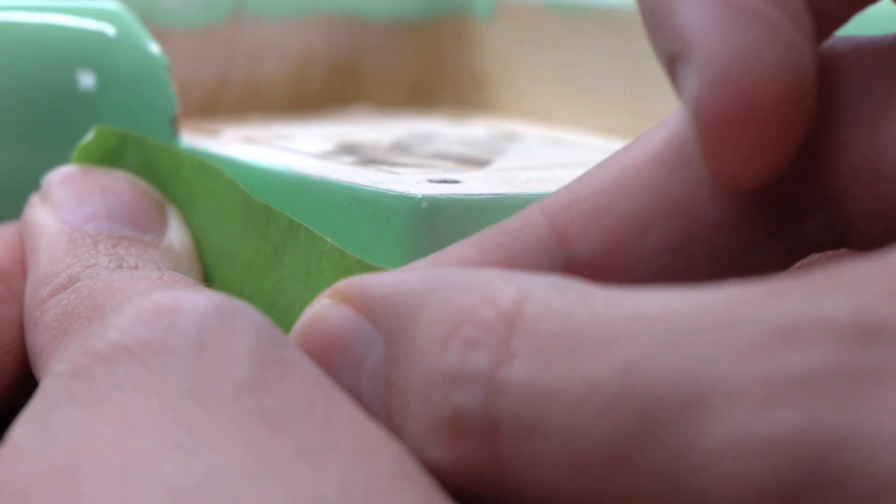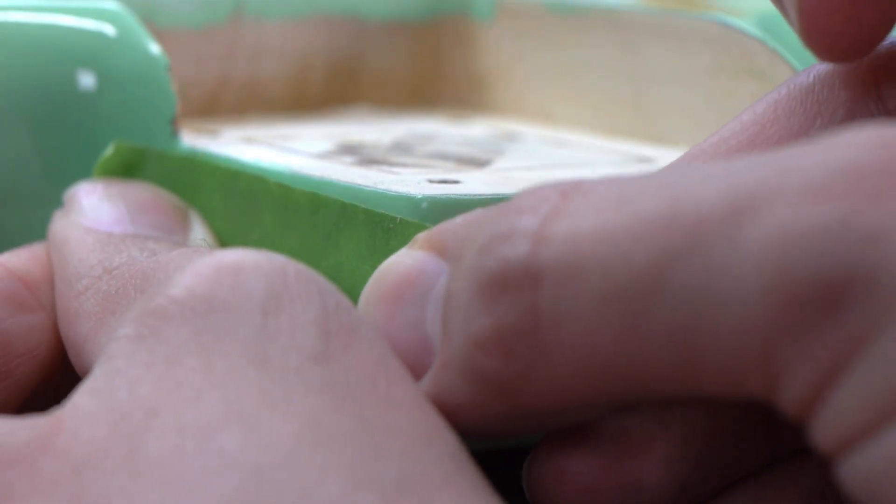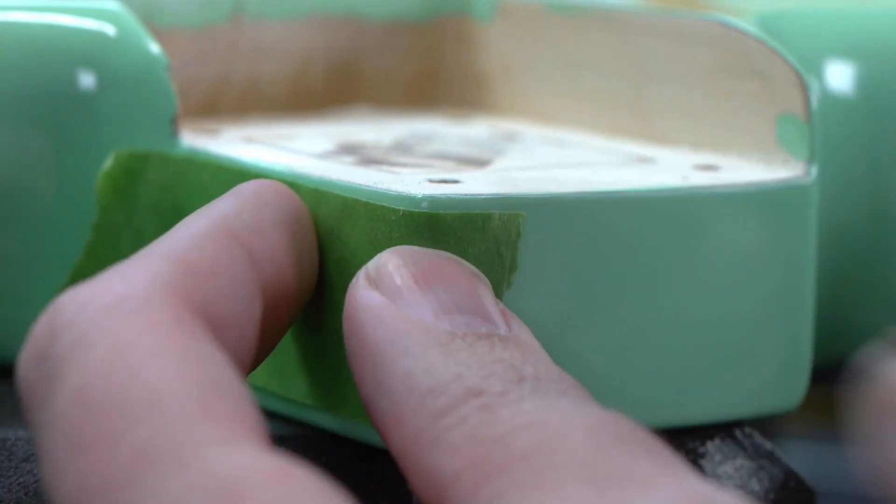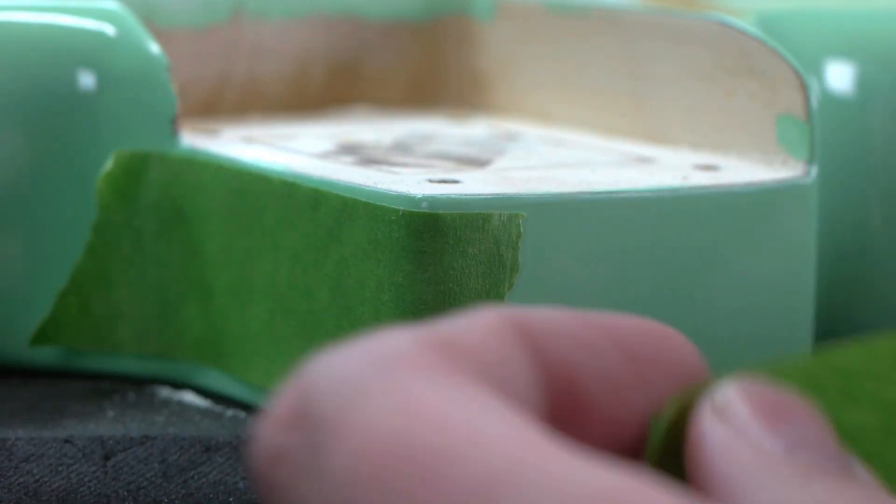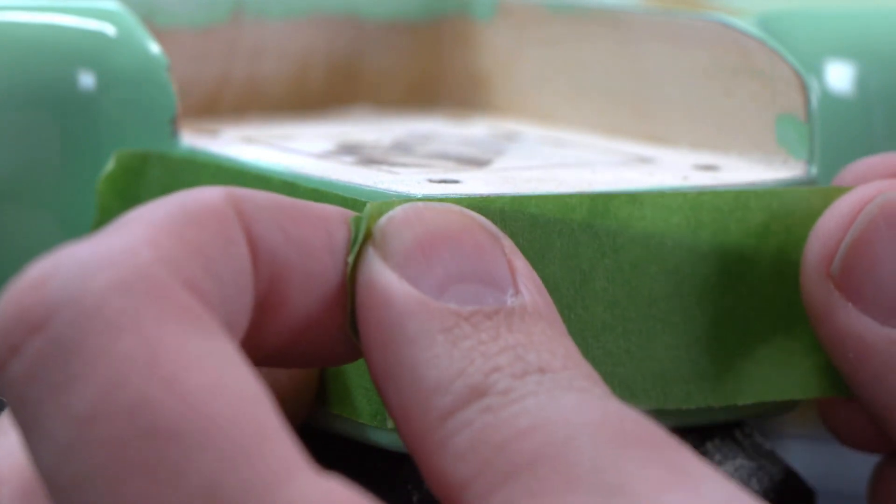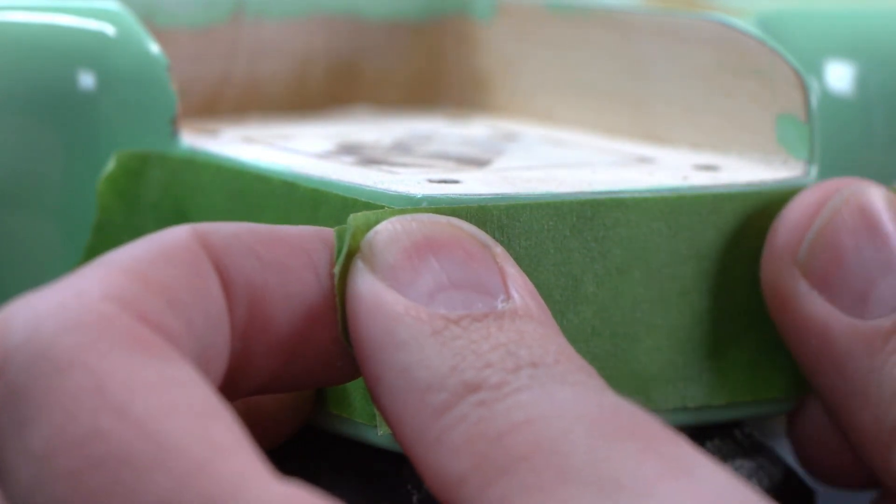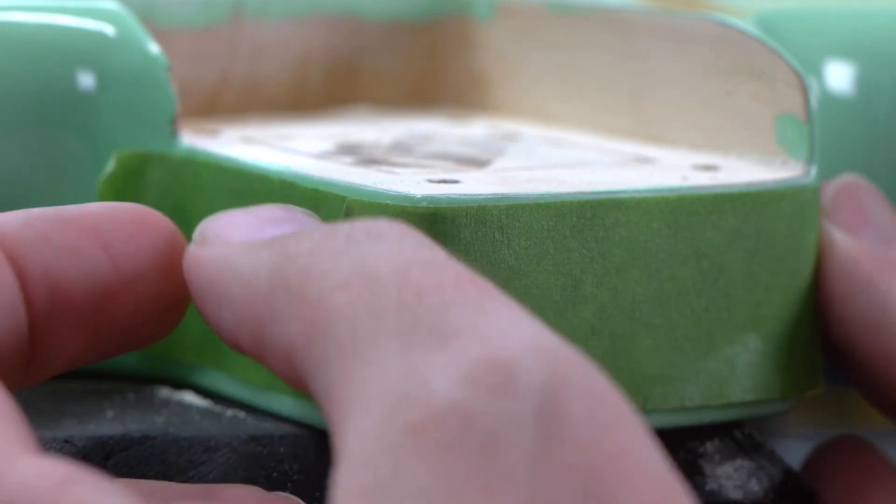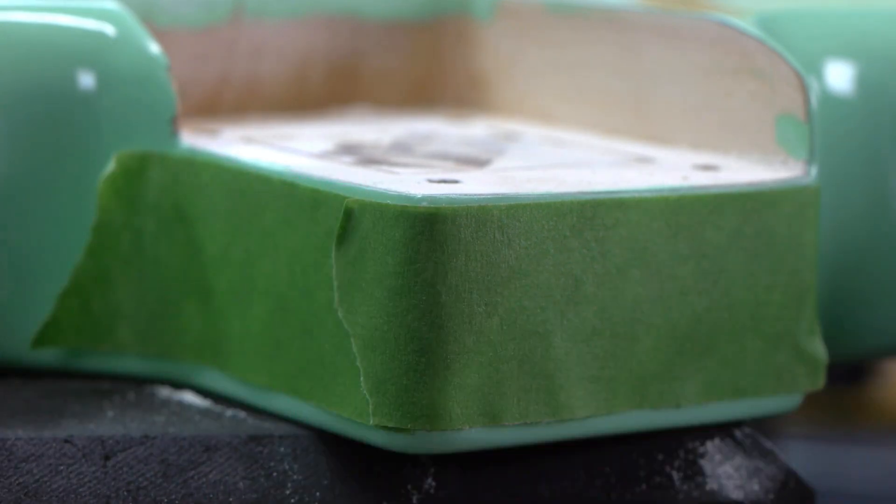That way, if a chip does come out, there's a chance it'll get trapped by the masking tape or at least prevent a bigger chip from coming out, which will make touching up the area easier. If you can find the chip that comes out, you can carefully super glue it back into place, then wet sand and buff, and if you're lucky, nobody will ever know the difference. With delicate work like this, you always have to think ahead and be prepared for the worst-case scenario.